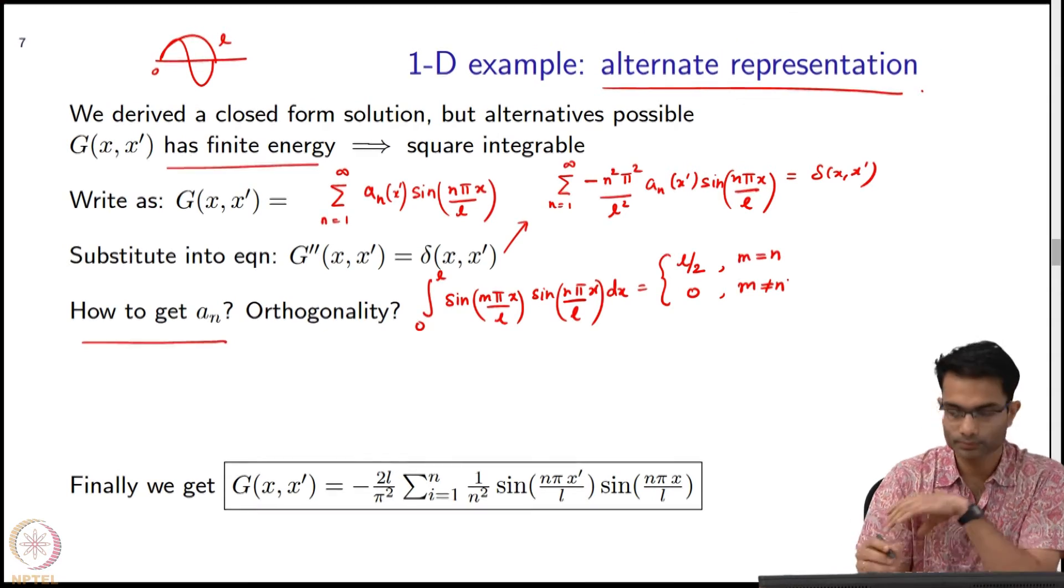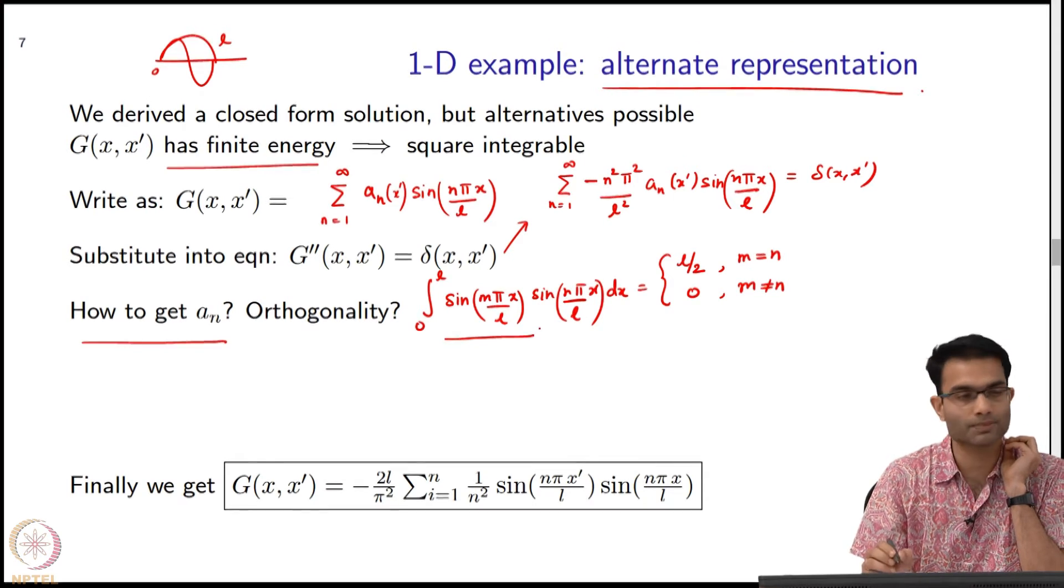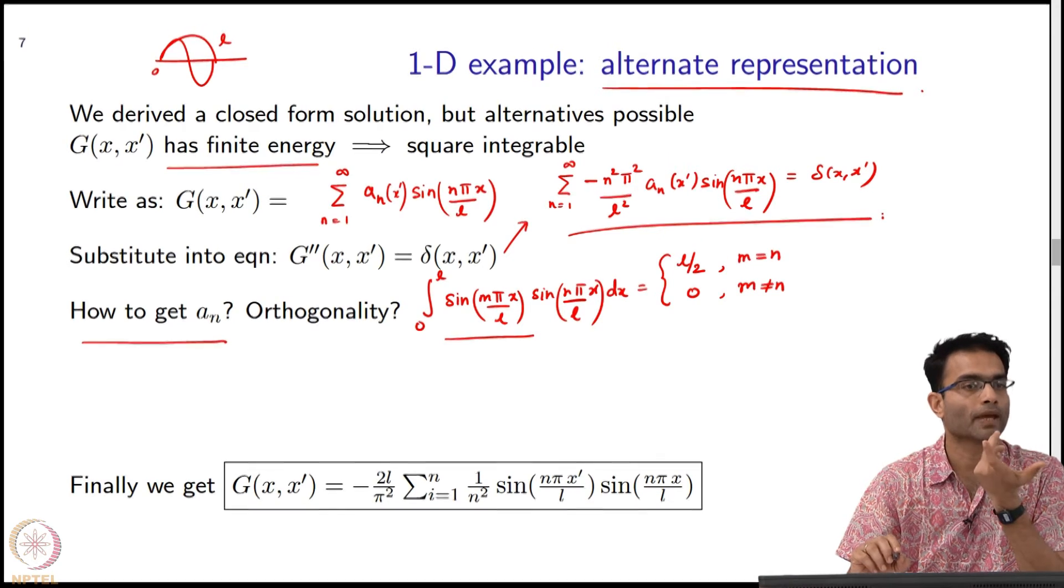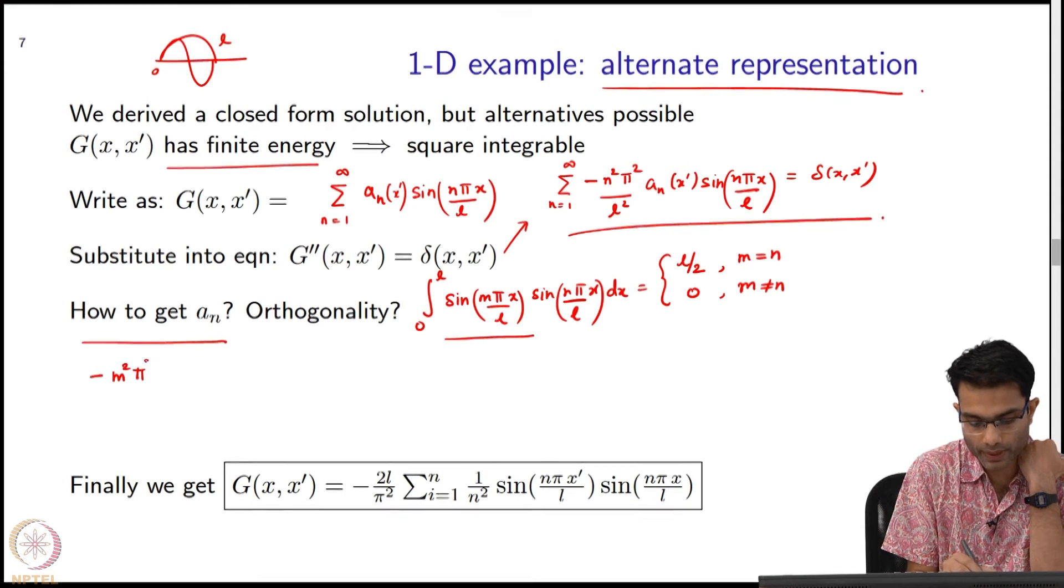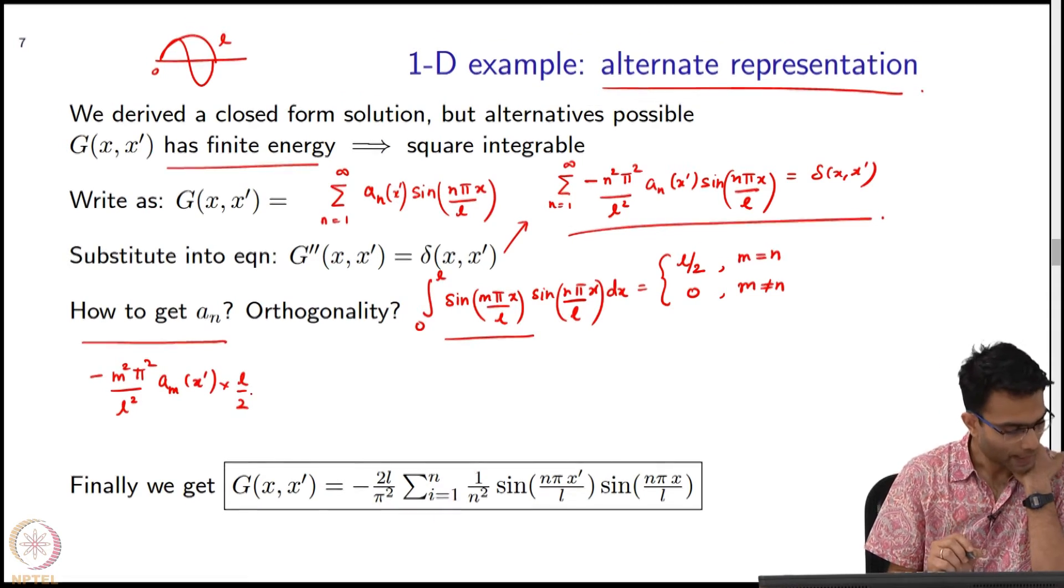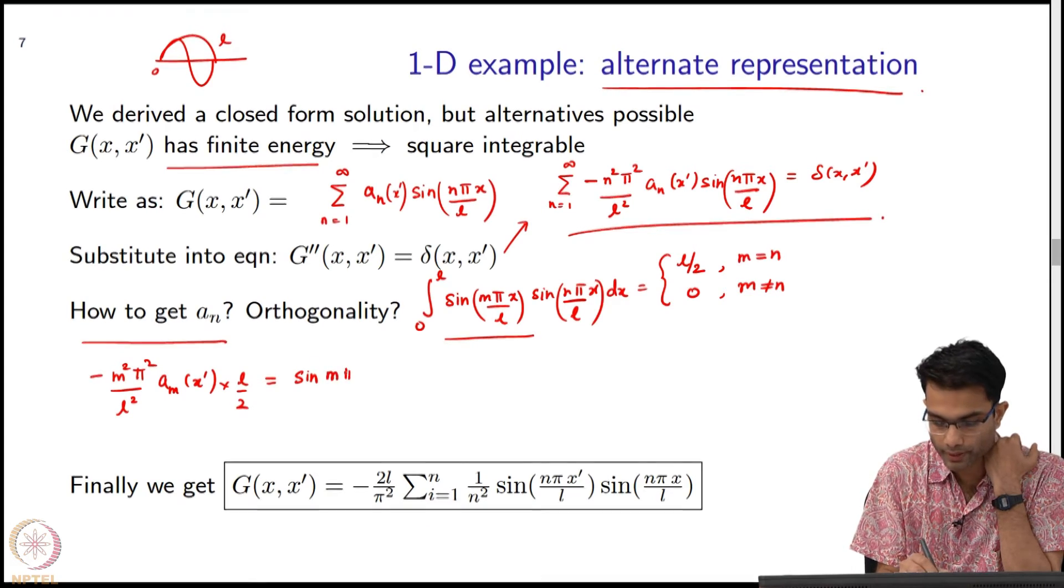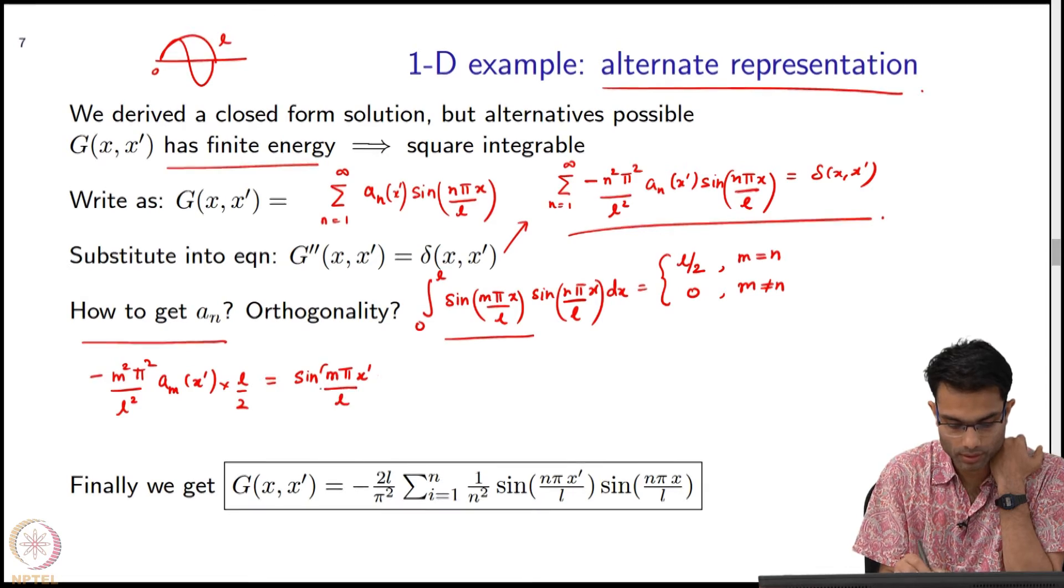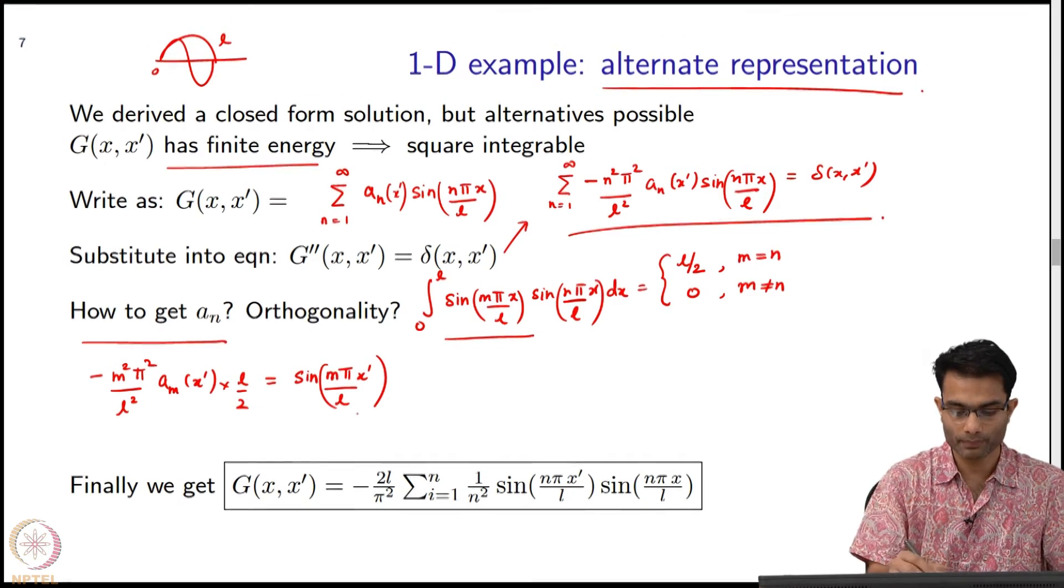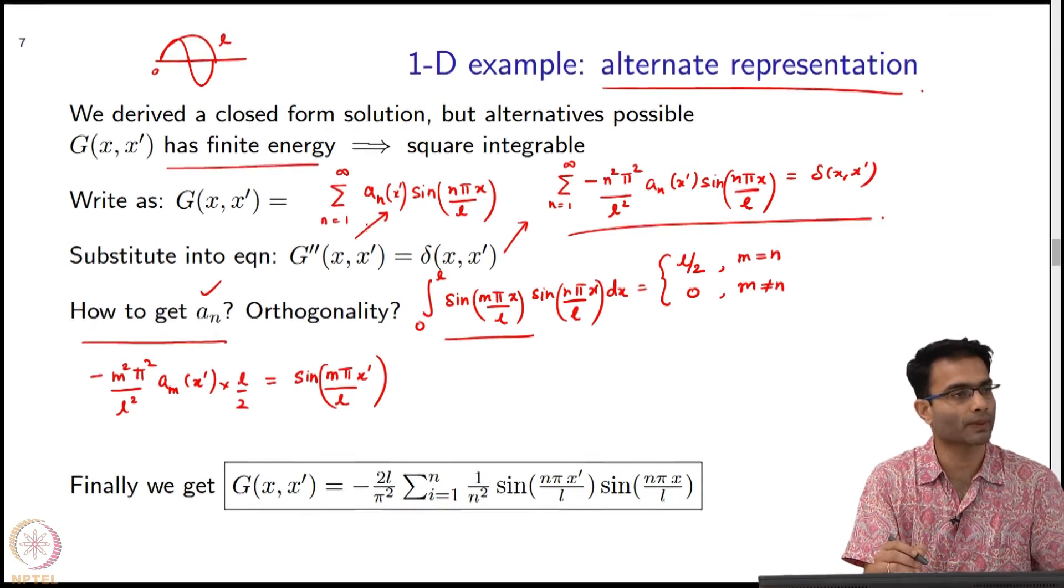What happens to the left hand side? Which term will survive? m A_m. The left hand side will be minus m²π²/L² A_m(x') times L/2. The right hand side is going to give me sin(mπx'/L). I have got my A_m, and then I plug it back into this relation.